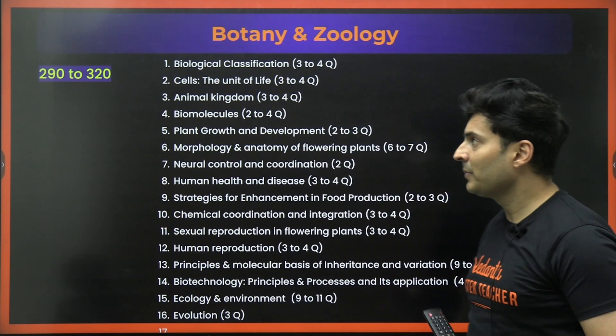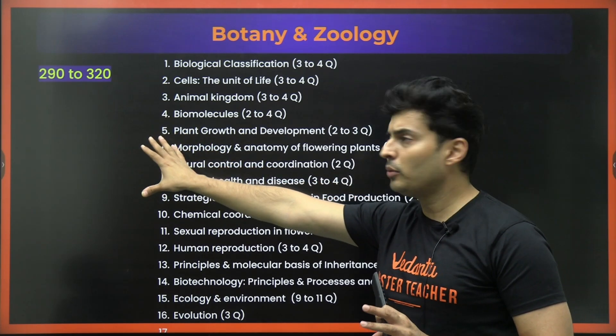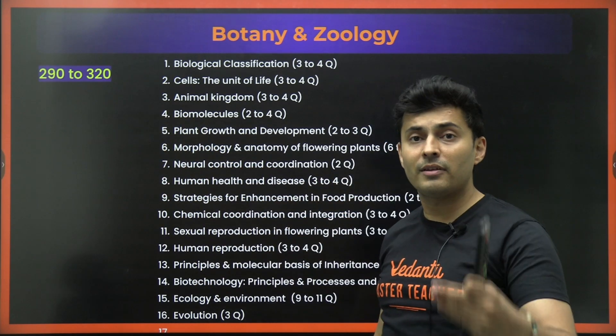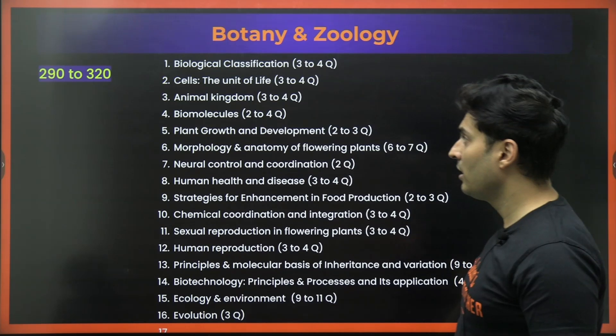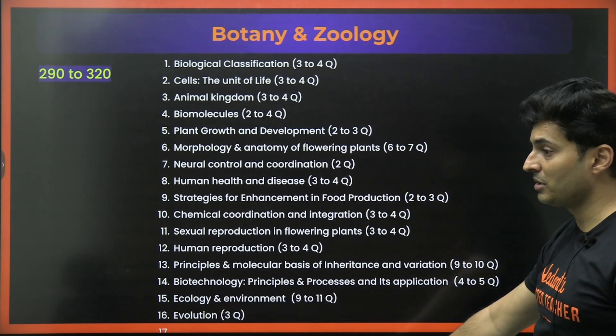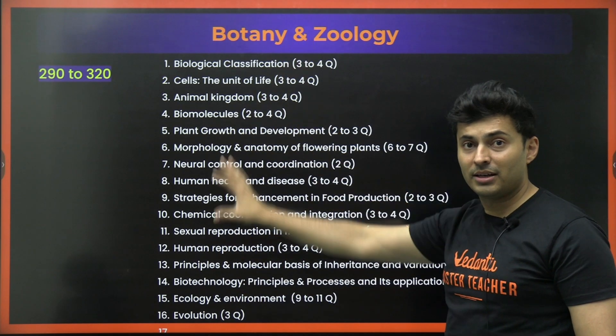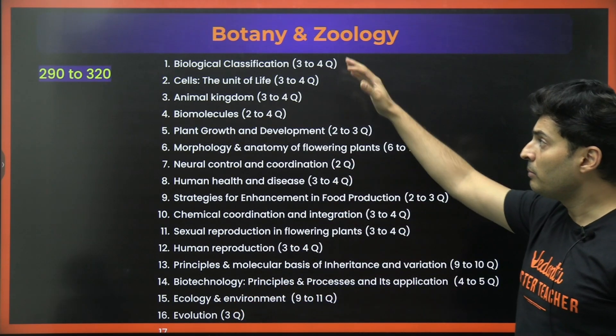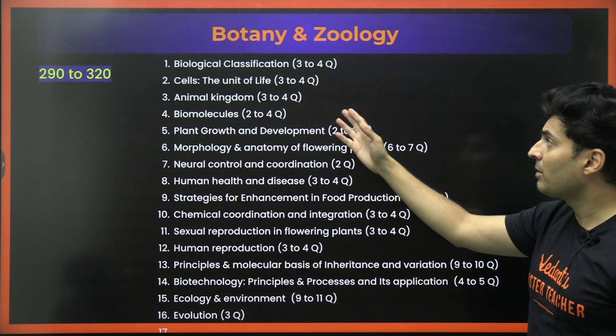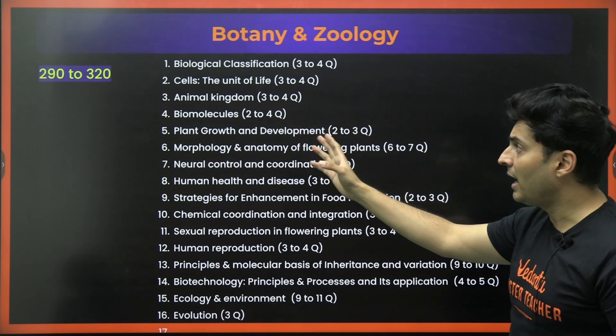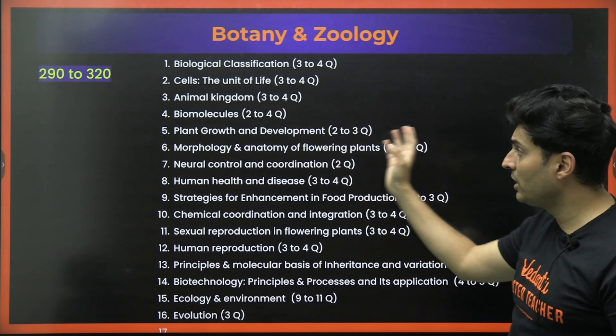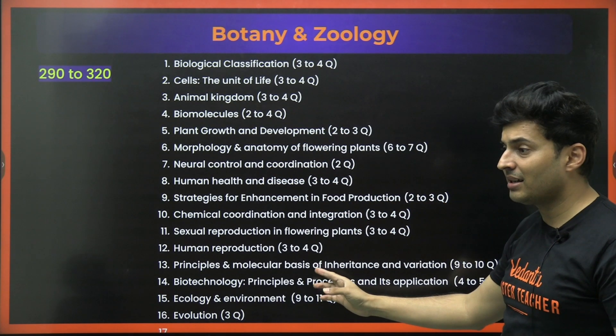Then moving on to biology, if you are targeting anywhere between 290 to 320 which I feel every NEET student must aim for 100%, these are the most important 16 topic lists which I have given to all of you. Make sure you are studying all these topic lists like biological classification, cells, animal kingdom, biomolecules, plant growth, development, so many topics are there.